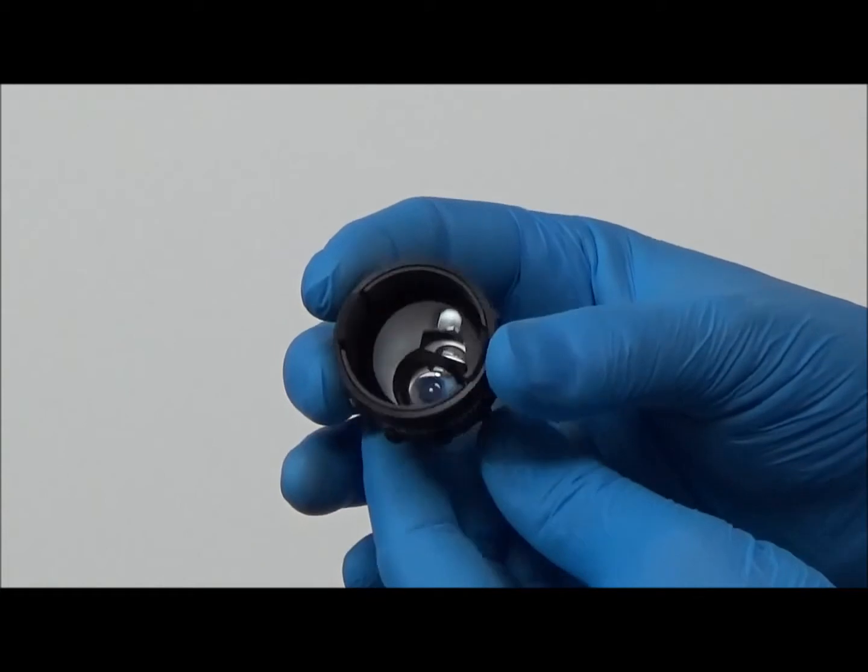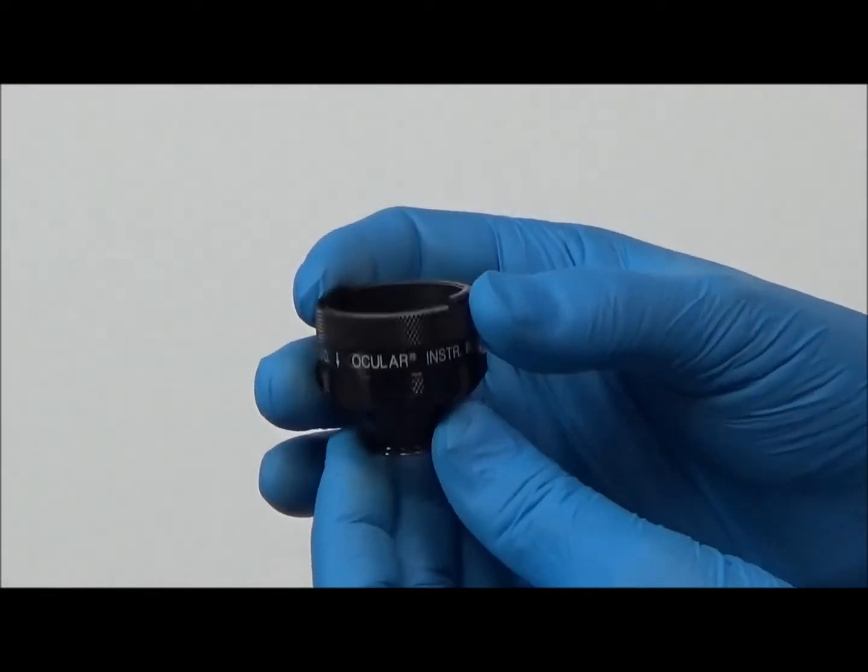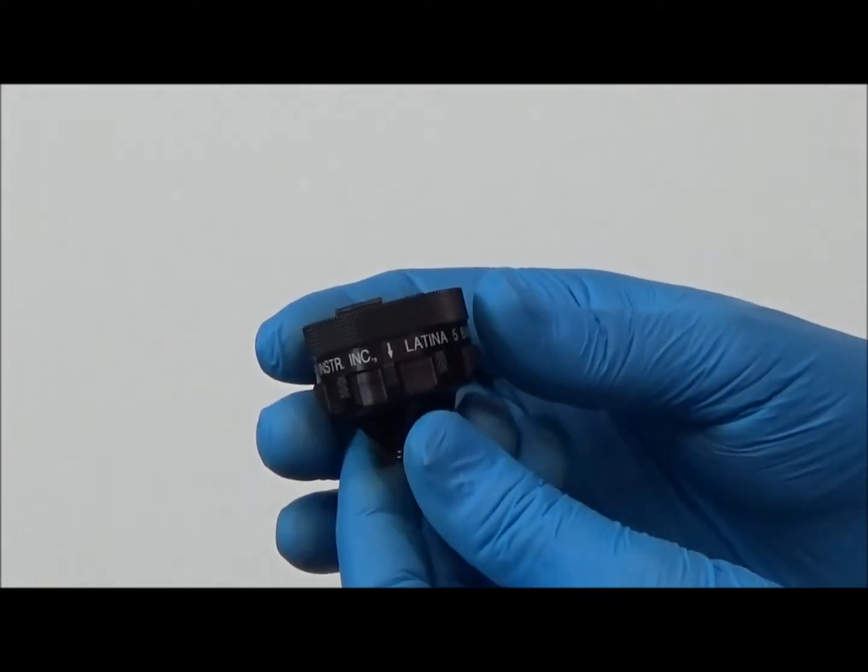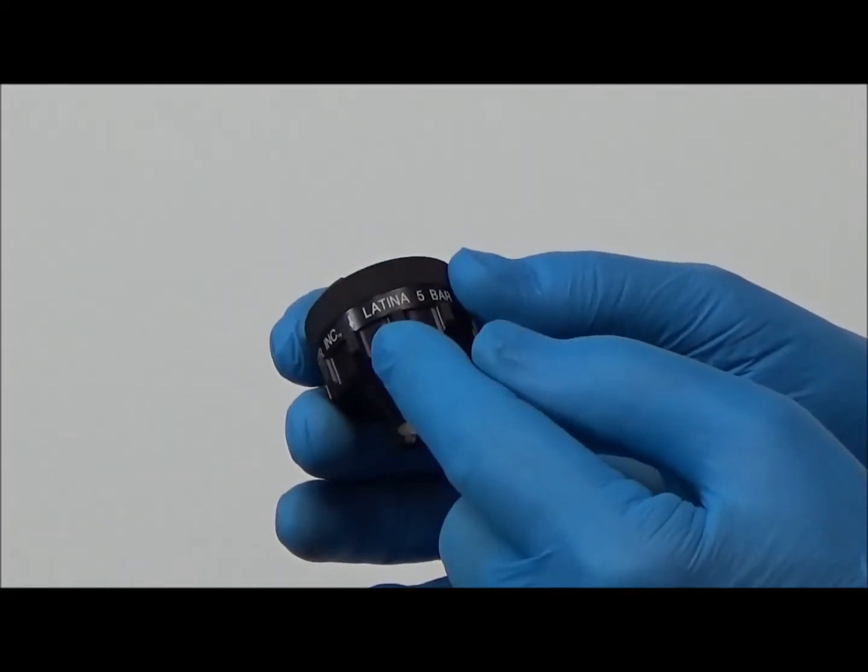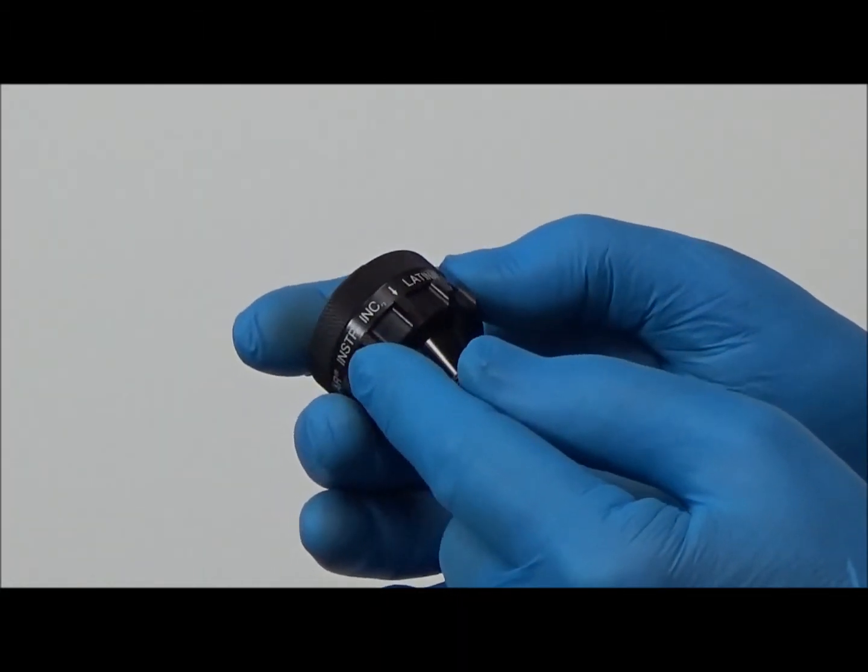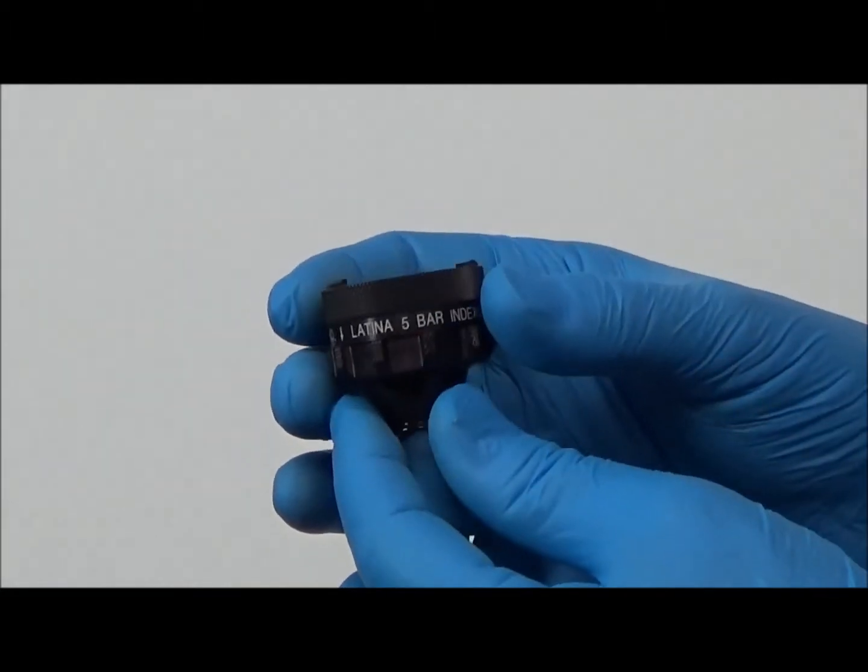The Latina indexing 5-bar lens consists of two main parts: the anterior knurled rim and the lens with its extended knurled tabs. Note the anterior rim is easily removed for cleaning.